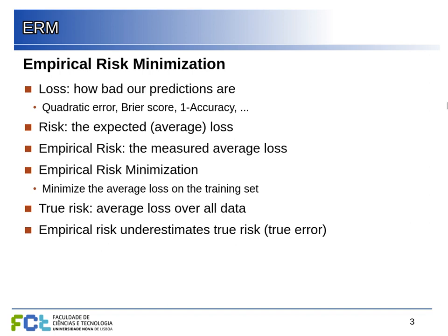The risk is the expected loss — the average over all future events. The empirical risk is the one that we can measure. If we count the fraction of mistakes we are making in our labeled dataset, that is an empirical measure of risk. The true risk would be the average over all the data — the true error rate. We cannot measure this, and typically if we measure the empirical risk in the training set, we will underestimate the true risk.